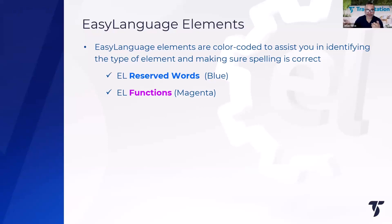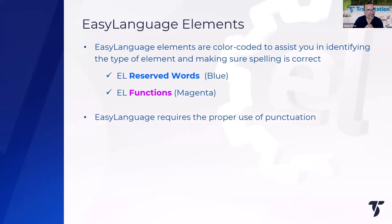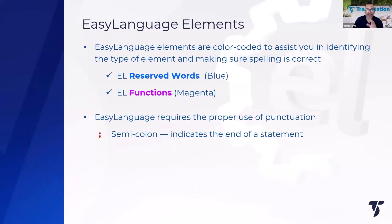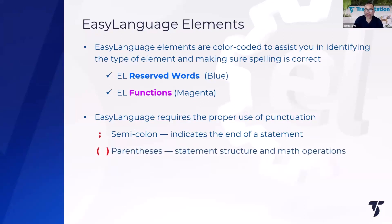Today we're going to write our own custom indicator and you'll see how these components come into play. EasyLanguage is very picky about punctuation. The most misused punctuation is the semicolon. In EasyLanguage, the semicolon is used to identify the end of a statement — similar to a period ending a sentence. If you don't use a semicolon to separate statements, EasyLanguage will try to jumble them together and it won't make sense.